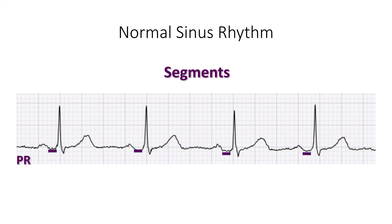Also, there are segments on the ECG to be aware of. Segments are slightly different than intervals, because segments don't necessarily involve the upward or downward deflections on the ECG. For example, a PR segment represents AV nodal conduction. On an ECG, we can't really see the electrical depolarization of the AV node well, because the AV node is a small structure, and it's also an insulated structure. So the time after atrial depolarization — which is the time after the P-wave, but before ventricular depolarization, i.e. the QRS — represents the quality and speed of conduction through the AV node.